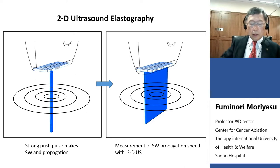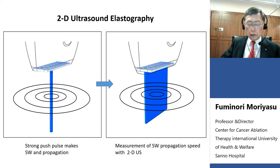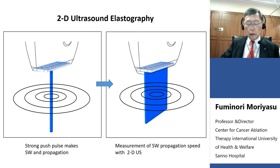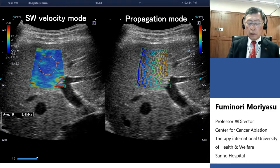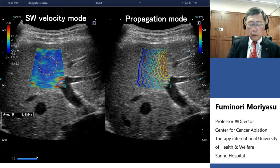In the case of 2D ultrasound elastography, shear waves can be produced using a strong push pulse, as seen on the left side of this slide. The shear wave propagation is observed and measured quantitatively using 2D ultrasound. The left side shows a color mapping of shear wave velocity, and using an ROI — region of interest — the average of the ROI is calculated.